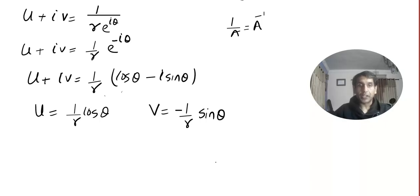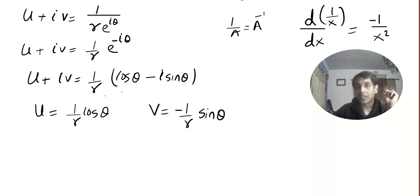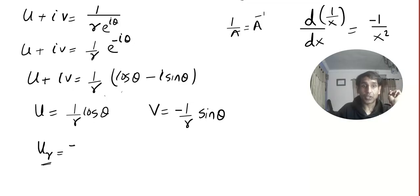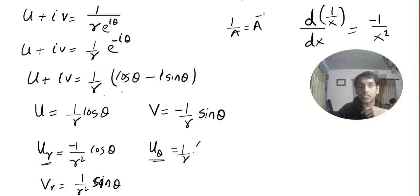Before we continue: the derivative of 1/x is −1/x². So u_r = −(1/r²) cos θ, and v_r = (1/r²) sin θ. For u_θ, since 1/r is constant, we get −(1/r) sin θ. And v_θ = −(1/r) cos θ. You can verify these satisfy the polar CR equations.